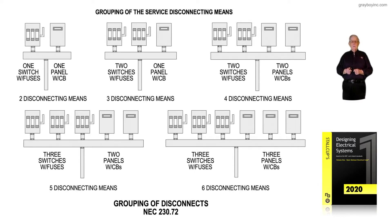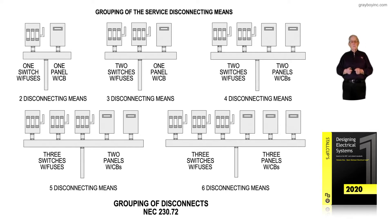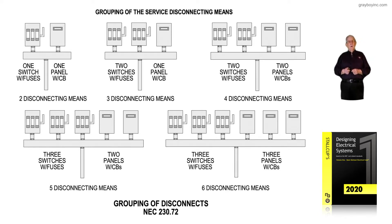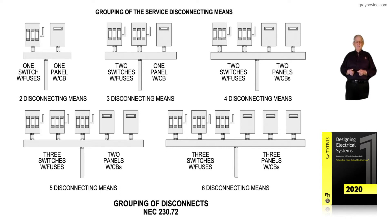This illustration deals with the grouping of disconnects in accordance with 230.72. Looking at the top left-hand side of the illustration, we have one switch and one panel board. Or we could have had two panel boards with a main in each one, or two switches with fuses — it depends on how you're arranging your service to supply the building.